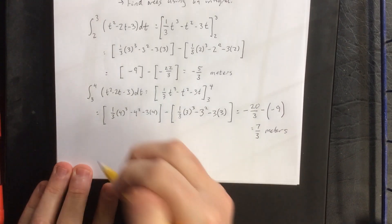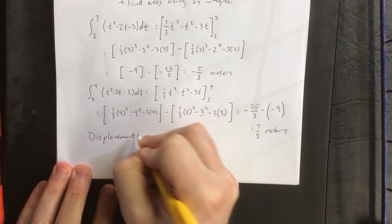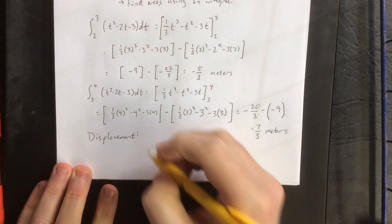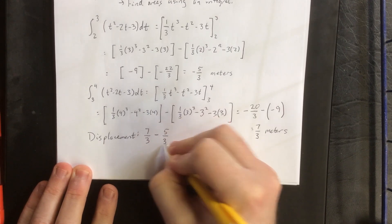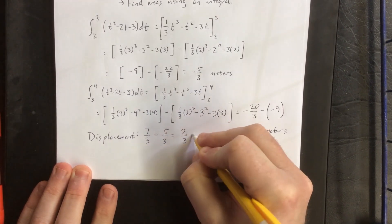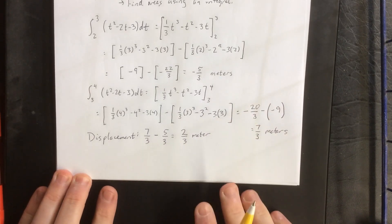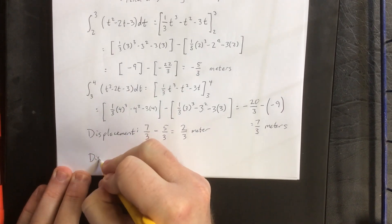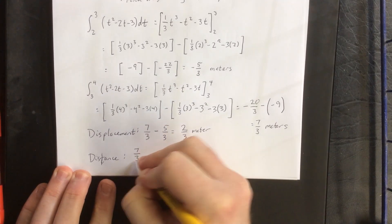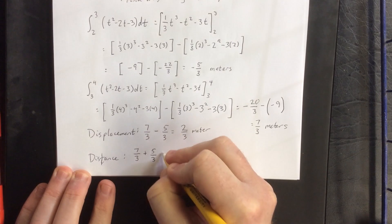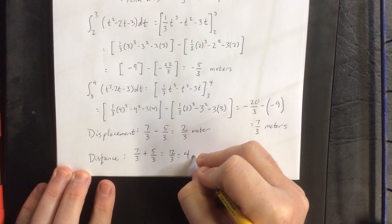So the difference between distance and displacement is displacement takes into account the signed area. That means positive is counted as positive, negative is counted as negative. So we moved 7/3 meters in the positive direction and 5/3 meters in the negative direction for an overall displacement of 2/3 of a meter. That would be the net change in position. The actual distance traveled would be we moved 7/3 in the positive direction and 5/3 in the negative direction. Both are accounted for as positives. This would be 12/3, which reduces to 4 meters.